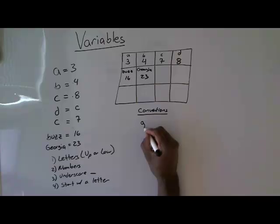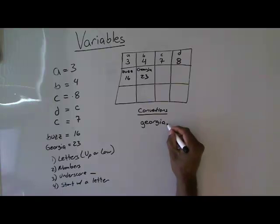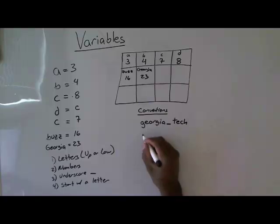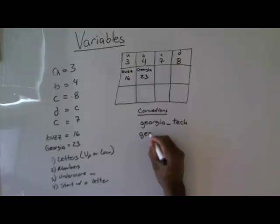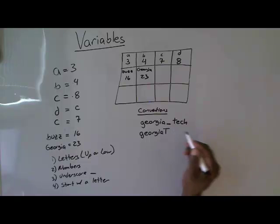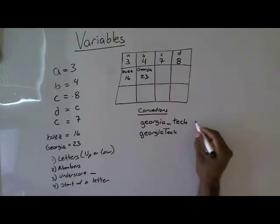So let's say if I wanted to do a variable called Georgia Tech, I would do it something like this. If it was a two word, I would either do Georgia underscore Tech, or I would do something like Georgia, and then capitalize the first letter of the second word so that it looks a little different. And these are variable names as well.